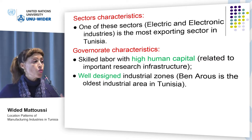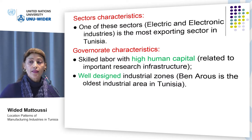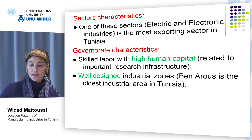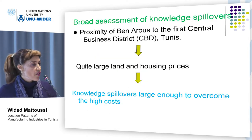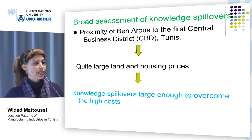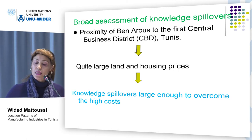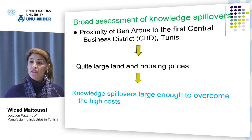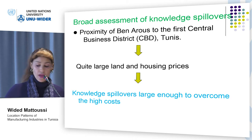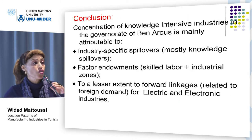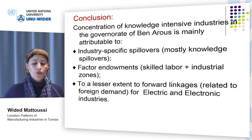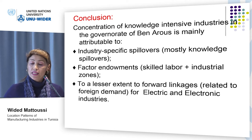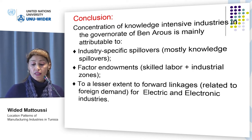Ben Arous is also characterized by its well-designed industrial zones, where a non-negligible portion of knowledge-intensive industry firms are located. Ben Arous is one of the four governorates of the greater Tunis, so it is characterized by its proximity to the first central business district, meaning quite large land and housing prices. The location of knowledge-intensive industries there is probably due to the important knowledge spillovers, which are likely to be more than enough to make up the high costs. One may then conclude that concentration of knowledge-intensive industries in Ben Arous is mainly attributable to industry-specific spillovers, mostly knowledge spillovers, to factor endowments including skilled labor pool with high human capital and well-designed industrial zones, and to a lesser extent to forward linkages related to foreign demand.